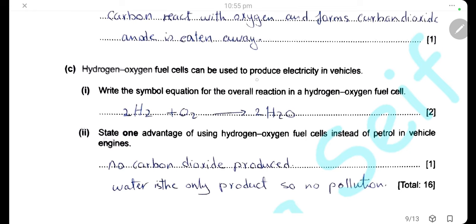A hydrogen-oxygen fuel cell can be used to produce electricity in vehicles. The overall reaction in the hydrogen-oxygen fuel cell is: 2H₂ + O₂ → 2H₂O. The equation must be balanced for full marks. One advantage of using a hydrogen-oxygen fuel cell instead of petrol in vehicle engines is that it does not produce carbon dioxide — the only product is water — so there is less pollution compared to burning petrol, which produces carbon dioxide.